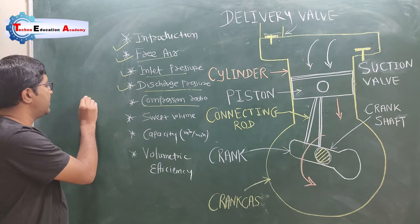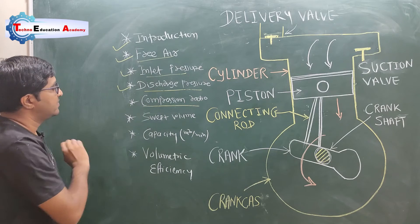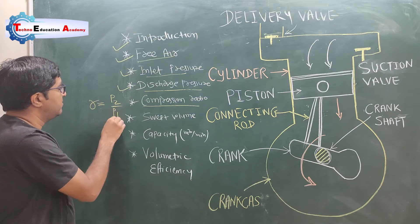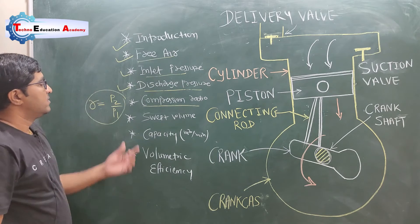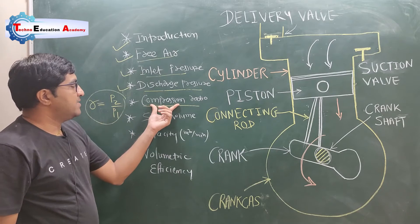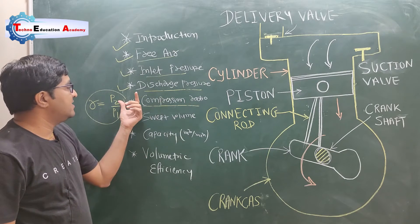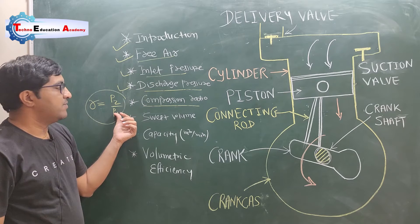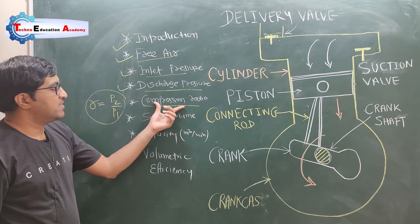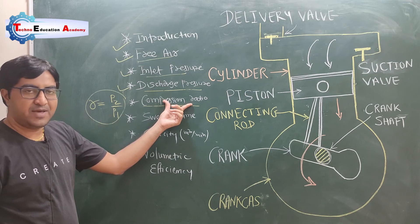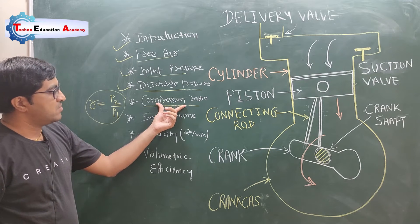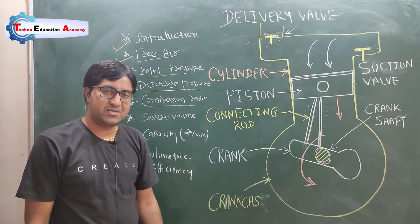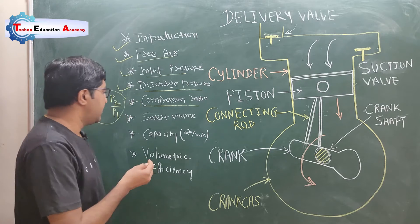The next term is compression ratio, denoted by r. Compression ratio: r = P2 / P1. It is the ratio of discharge pressure of air to the inlet pressure of air. It is called compression ratio, and it is a unitless term because it is the ratio of two pressures.